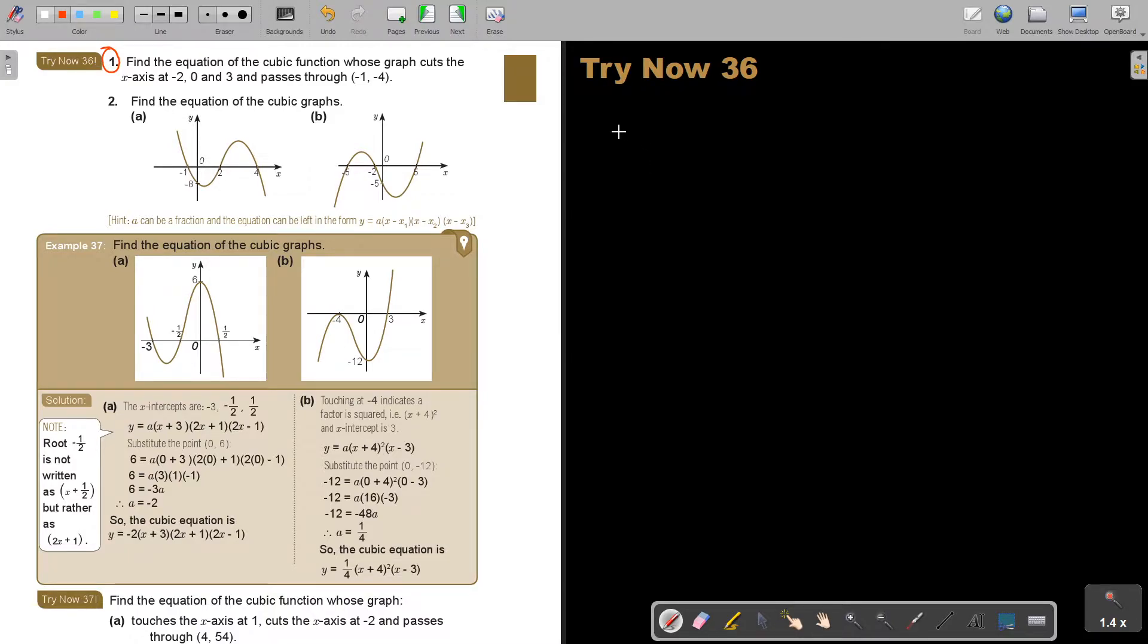Okay. Let's start. Number 1. Find the equation of the cubic function whose graph cuts the x-axis at negative 2, 0 and 3 and passes through this point. So start with the equation.